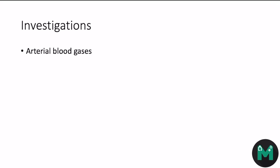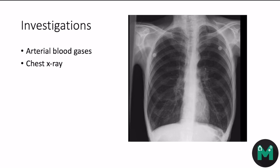In terms of investigations, ABGs are really important to determine if a patient is in respiratory failure due to hypoxia or hypercapnia. A chest X-ray is also important to rule out differentials. Key signs in a COPD patient include hyperinflated lungs with flat hemidiaphragms, reduced peripheral lung markings, emphysematous bullae, signs of right ventricular hypertrophy, and large pulmonary arteries.